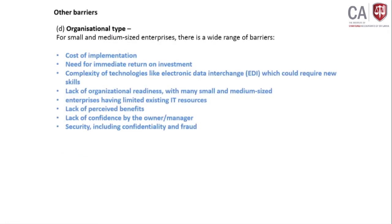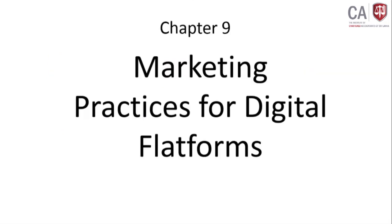For small and medium-sized enterprises there is a wide range of barriers, including the cost of implementation — you have to spend a lot on internet security and infrastructure. There is also a need for an immediate ROI. These are some of the other barriers to e-business adoption. This completes Chapter 8; we are now continuing with Chapter 9, which concerns marketing.